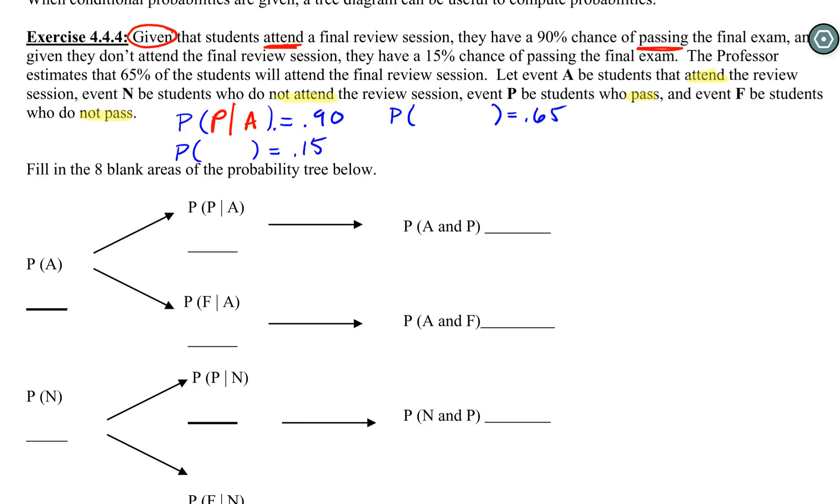We know they attended, that makes their chance of passing 90%. Sounds like a good deal - I'd attend that review session. And given they don't attend, given not attending, they have a 15% chance of passing the class. This to me already shows this is not an independent event. You have a 90% chance of passing if you attend and a 15% if you don't attend. On the last sentence, the professor estimates that 65% will attend.